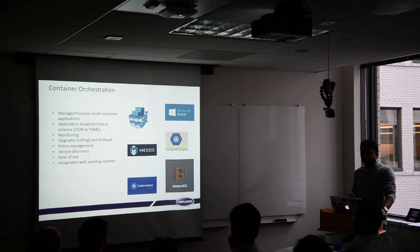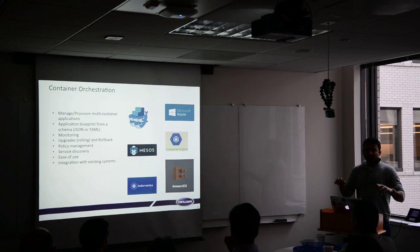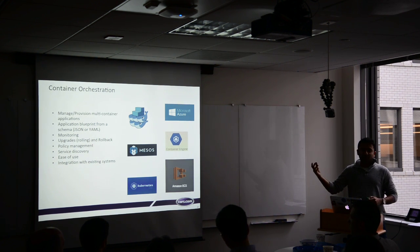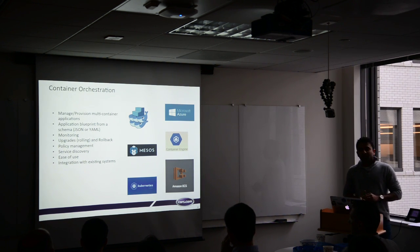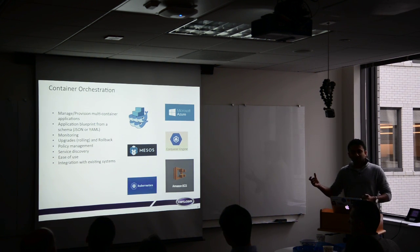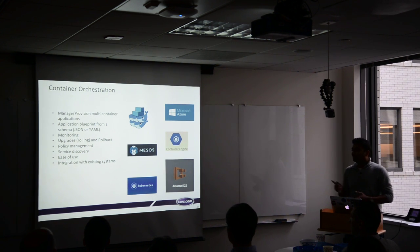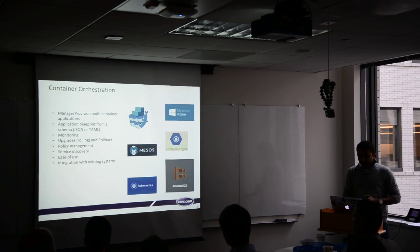Orchestration should also provide monitoring — if one container goes down, you should have policy management so you can say 'I want to run 100 containers of this application at any given time.' If a host dies and you lose 10 containers, the orchestration tool should bring those back to your desired state. It should provide service discovery built into the cluster so containers can find dependent services. And most importantly, it should integrate with existing systems like your CI tools and monitoring tools.